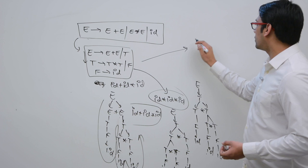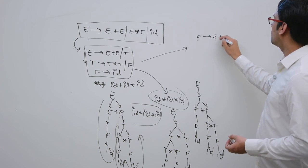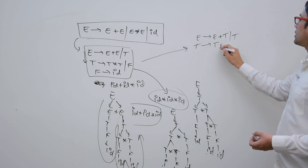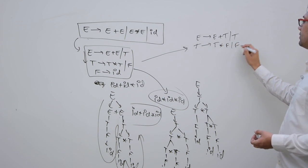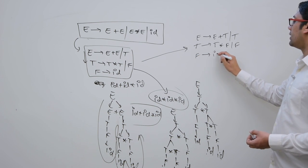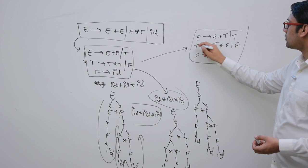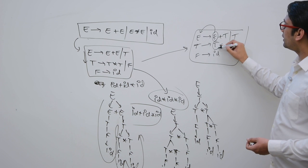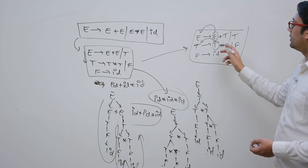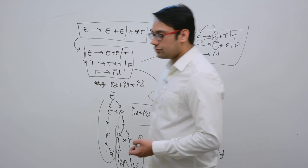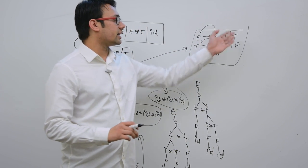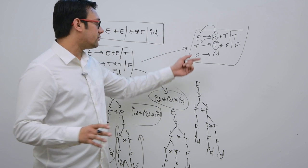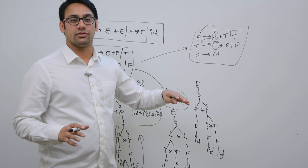For example, in this case you can do E derives E plus T or T. T derives T star F or F, and F derives ID. Now in all the productions, E is calling itself on the left side — that is why it is called left recursive. If you make it right recursive, that means the recursion is on the right side. Here we have defined the associativity.